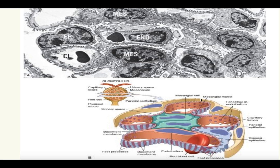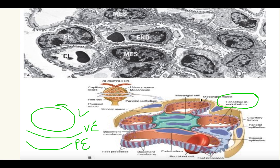Looking at the microscopic picture of the glomerulus: there is a fenestrated endothelium in the glomerulus, then visceral epithelial cells, and parietal epithelium. The visceral epithelial cells have projections from the cytoplasm in the form of foot processes. You can see the visceral epithelial cell — the blue one — and the projections form the foot processes. On electron microscopy these foot processes are also visible.